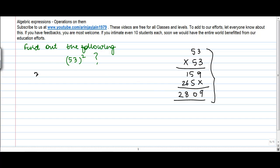We know the identity, x plus y whole square is equal to x square plus y square plus 2xy. Now 53 square can also be written as 50 plus 3 whole square. Right?